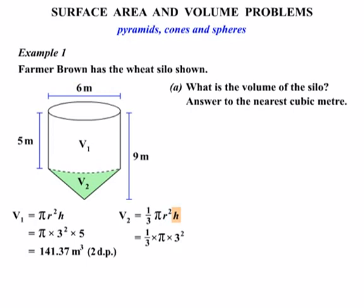And we'll times that by the height. Well, how can we work out the height of our cone? It's this height here. We know the height of the whole silo is 9 meters, and this here is 5 meters. Take that away from 9 gives us a height of 4 meters there.